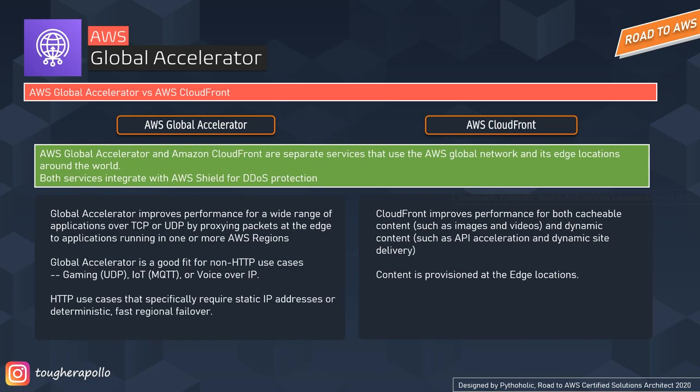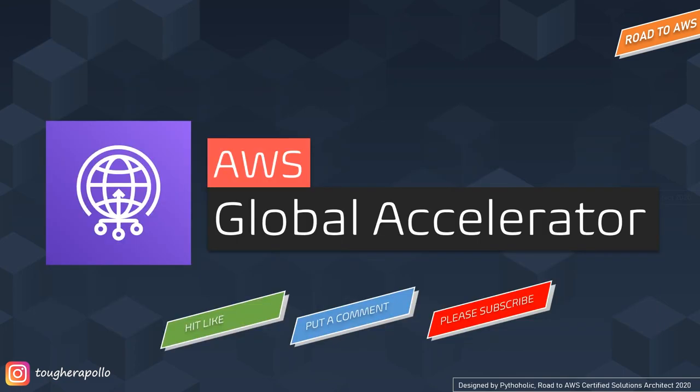This was an overall discussion on AWS Global Accelerator. For exam questions: if asked which service can improve application performance and reduce latency by up to 60 percent, the answer is AWS Global Accelerator. The hands-on demo is coming right up. It takes a lot of effort to make these designs and videos, so please like, share, comment, and subscribe. Stay safe, stay healthy, and I'll meet you in the next one.